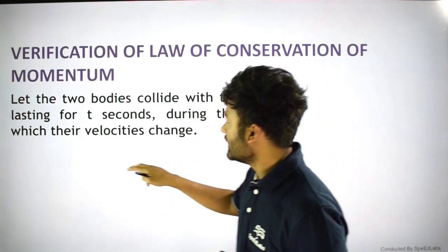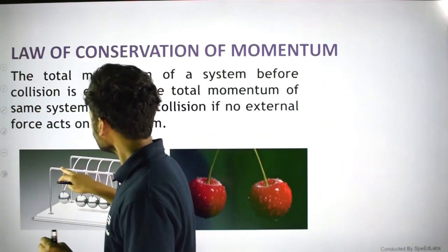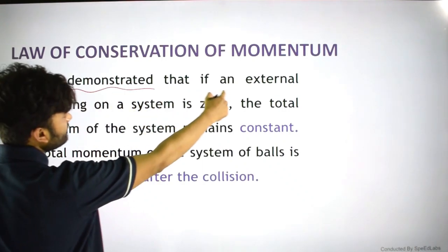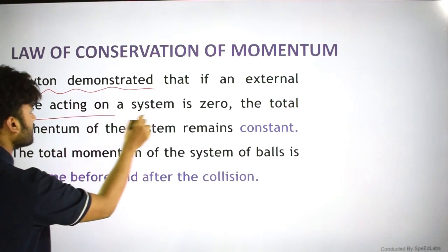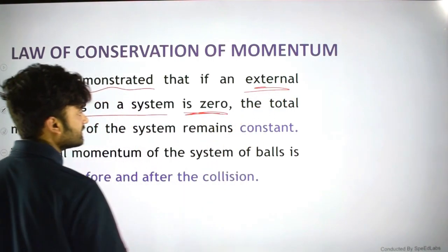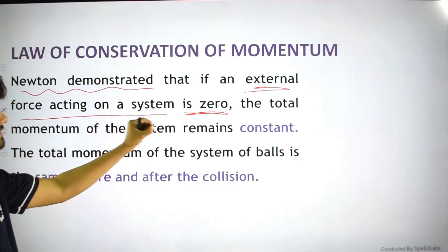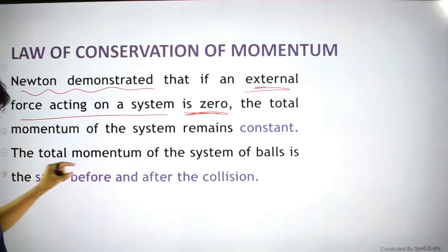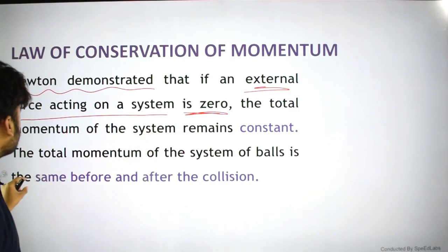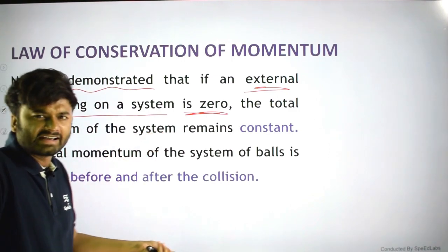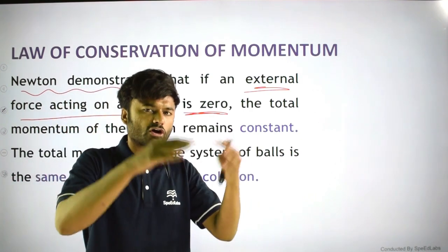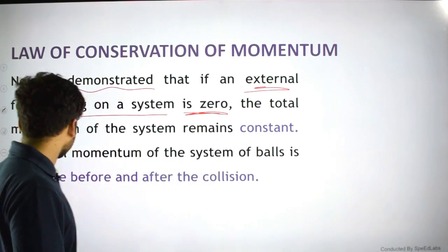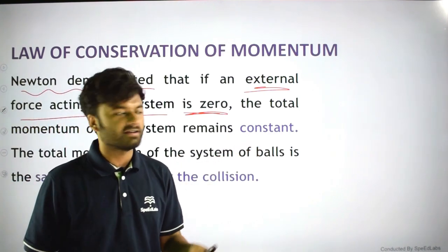Newton demonstrated that if any external force acting on a system is zero, the total momentum of the system remains constant. The total momentum of a system of balls is the same before and after a collision.